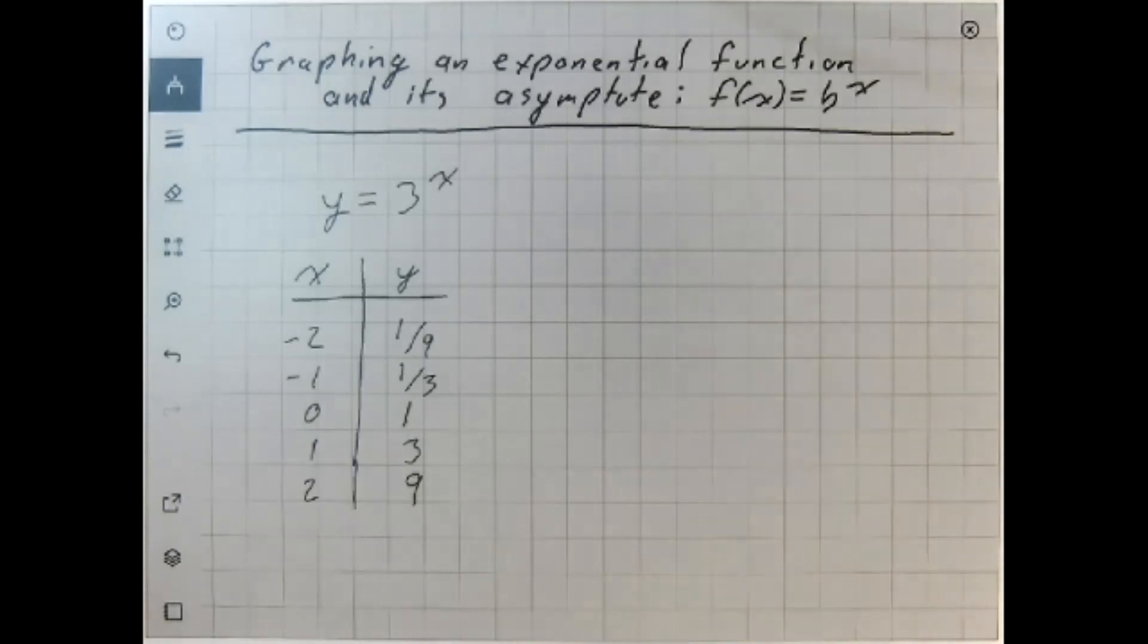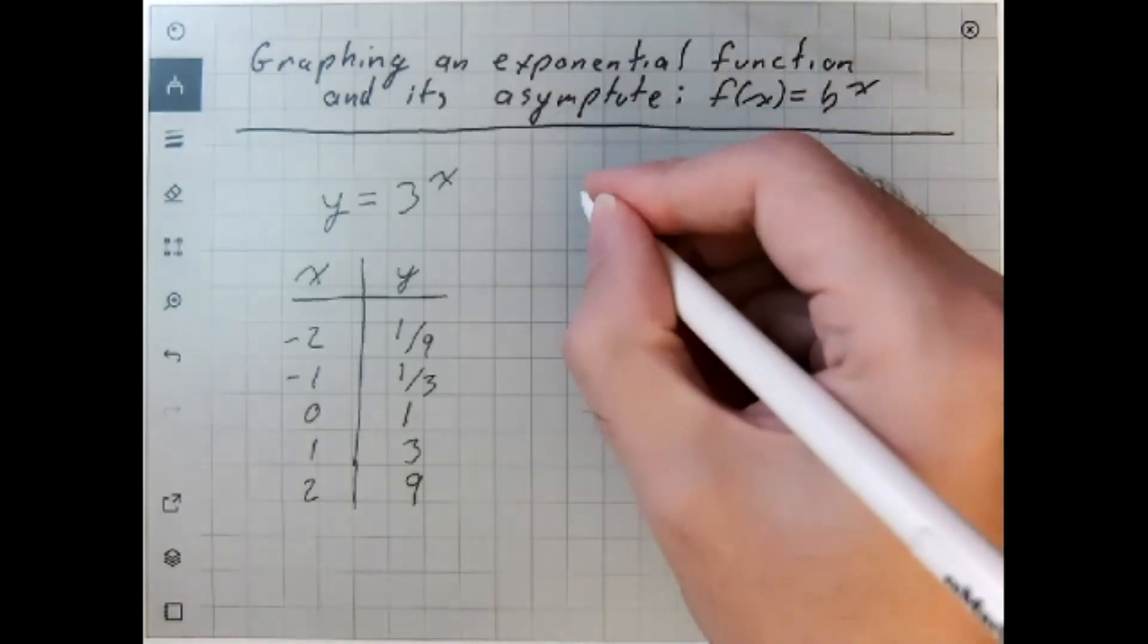Now, one thing that you need to know about exponential functions is that every exponential function has a horizontal asymptote.